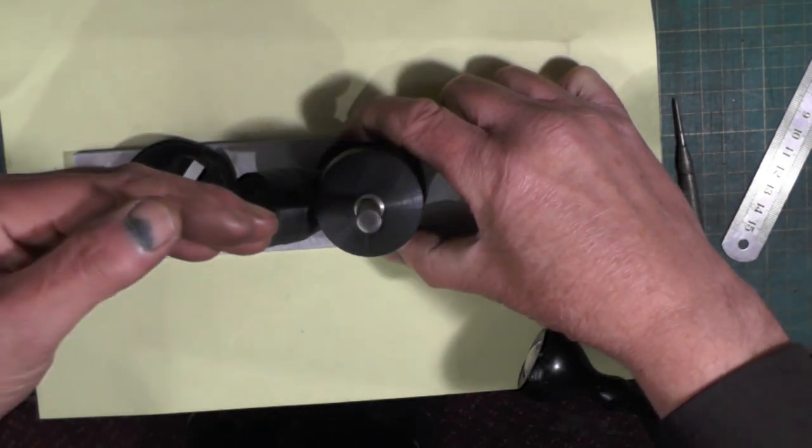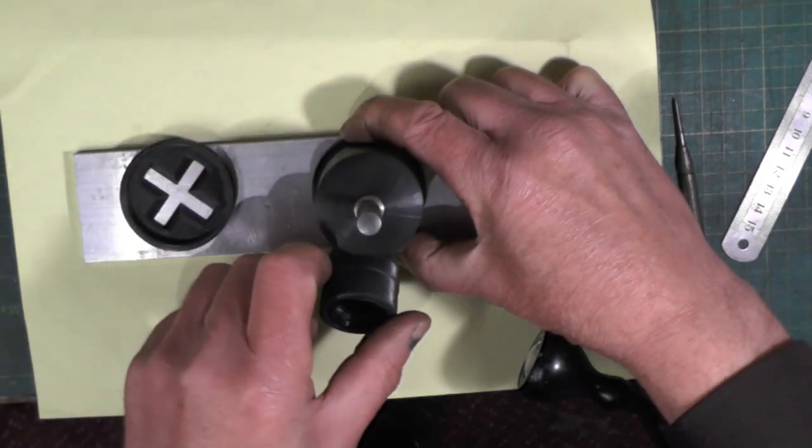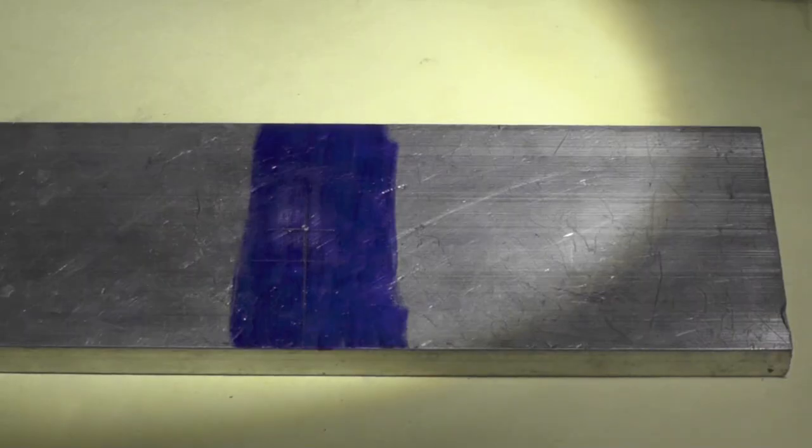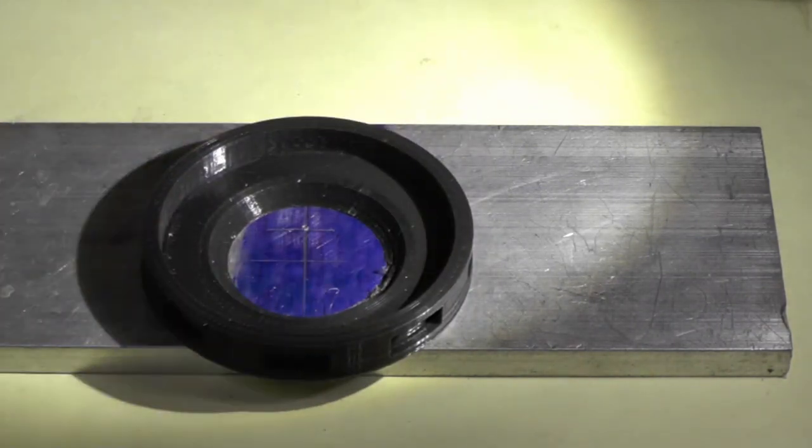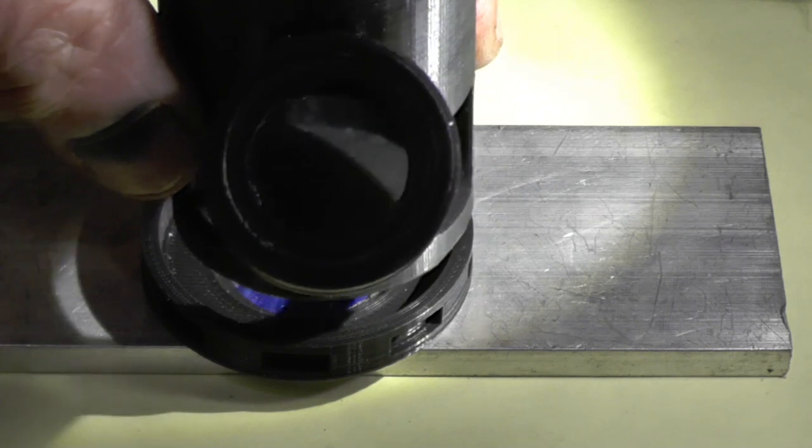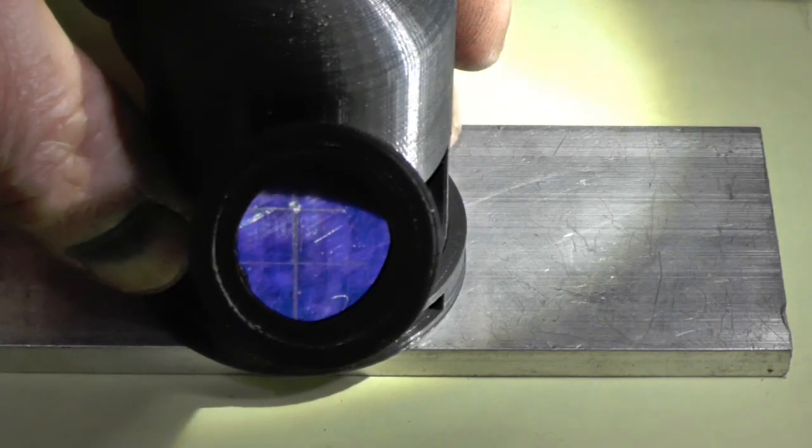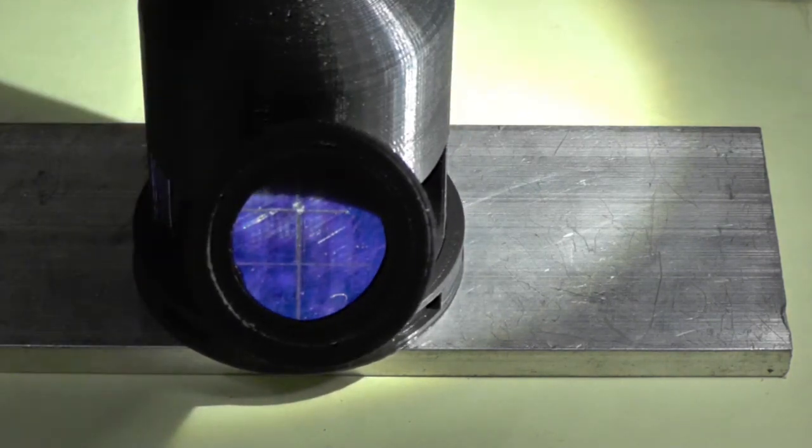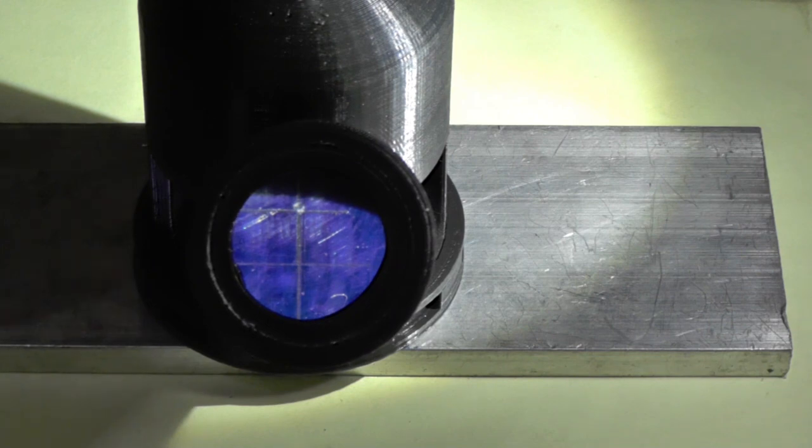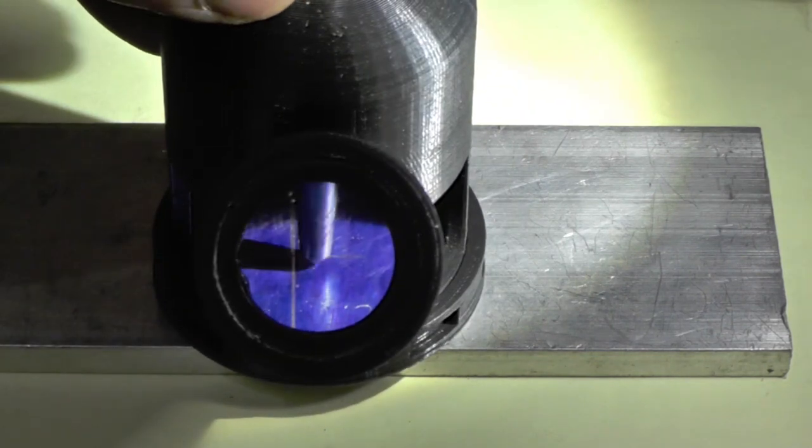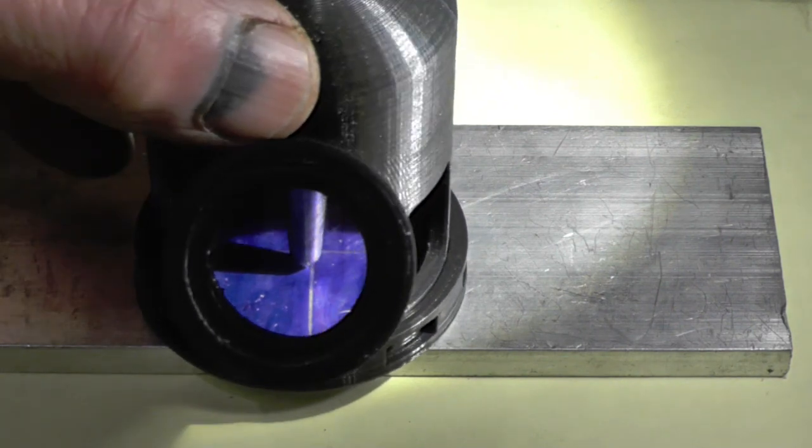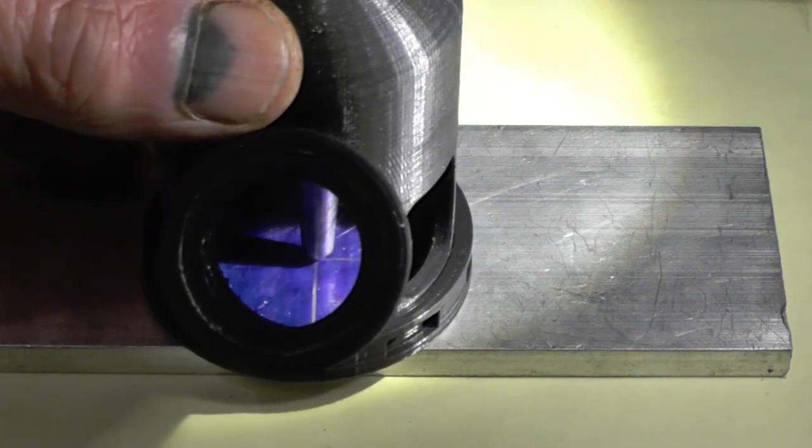Right, just a quick demonstration then. All you do is mark your component off, put the base onto the component, put the instrument onto the base, put the center point through the bush, and just line the crosshairs up.